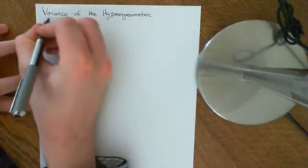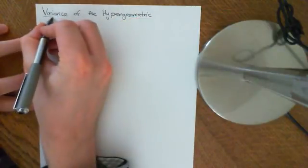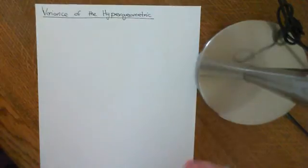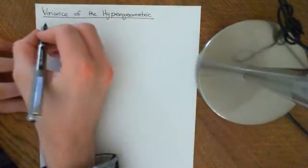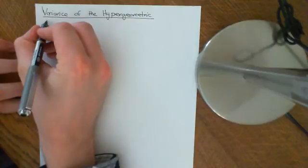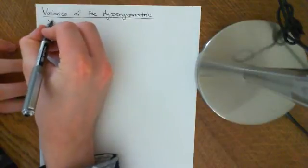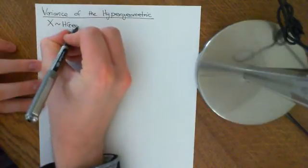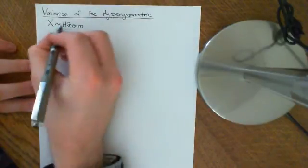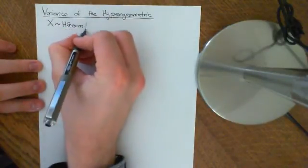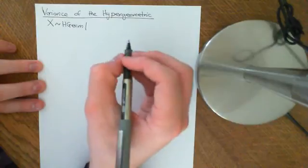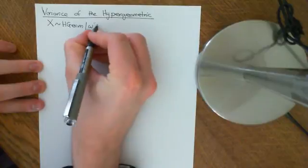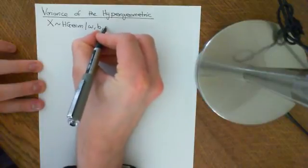I'm going to firstly remind you of what the hypergeometric distribution is, since it was quite a while ago since we covered it. So let's say we have a random variable X which is hypergeometrically distributed. There are three parameters in the hypergeometric distribution, and we'll give them the parameters W, B, and N.